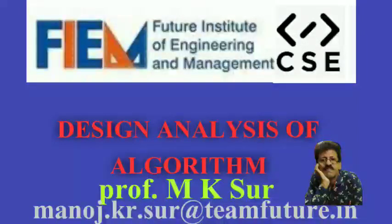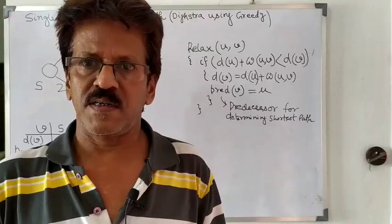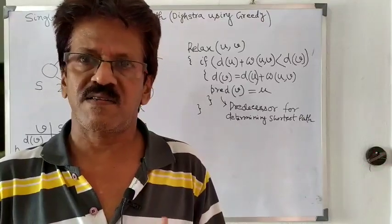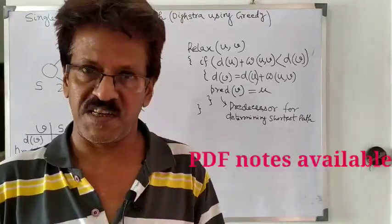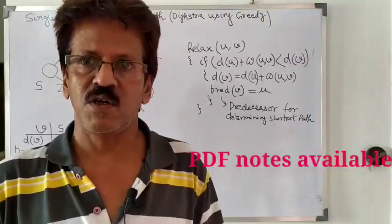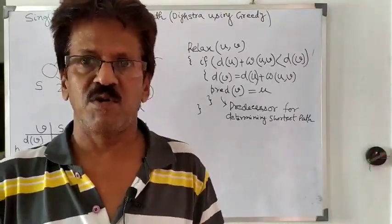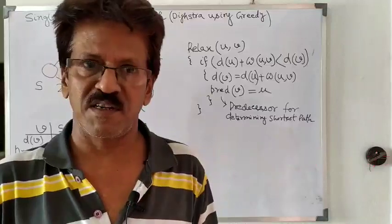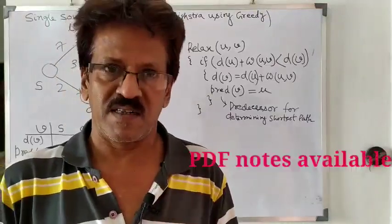Speaking about Dijkstra — Dijkstra can be implemented using a directed or undirected graph, but mind it: we can't apply Dijkstra whenever the weight of the edges contains a negative value. In that situation, we have to apply a different algorithm, which we will discuss in a different video. Now we concentrate on only the directed graph.